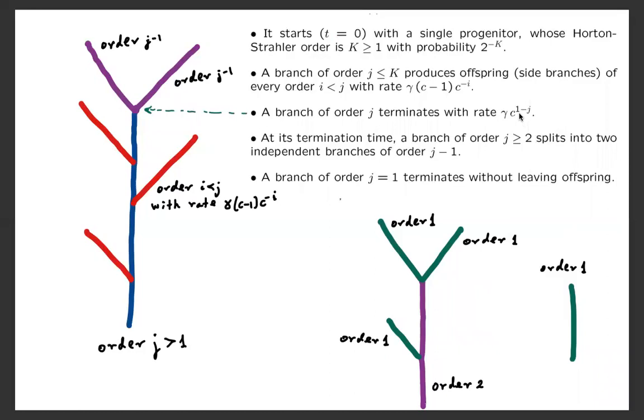While the main branch of order j continues until it terminates with rate gamma·c^(1-j). And at its termination time, a branch of order j ≥ 2 splits into two independent branches of order j-1. Finally, if the branch is just a leaf, that is of order one, then it terminates without leaving any offspring.